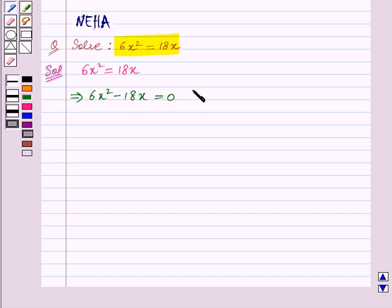So we express the given equation in the form ax square plus bx is equal to 0, where a is equal to 6 and b is equal to minus 18.